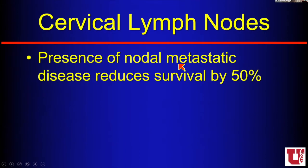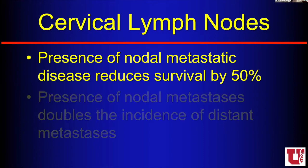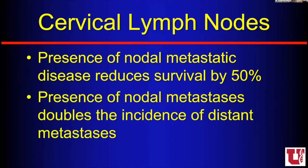The presence of nodal mets actually cuts your prognosis in half — it decreases survival by 50%. So when a head and neck cancer patient shows up, almost half of those patients have at least one pathologic node, and if you find a definite pathologic node, you just cut the prognosis in half. The presence of nodal mets also doubles the incidence of distant mets.